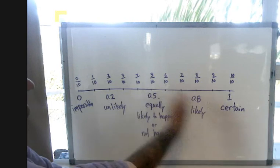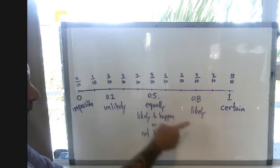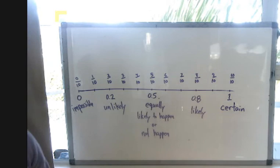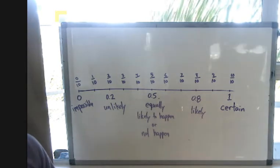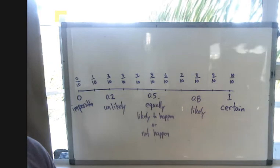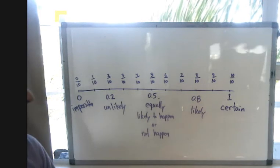If something is to the right of 0.5, for example, 0.8, we'd say it's likely that that happens. For example, the probability that the All Blacks are going to win most of their games this year. It's likely. They're a dominant team.